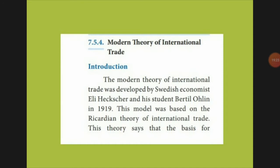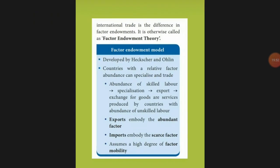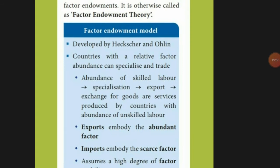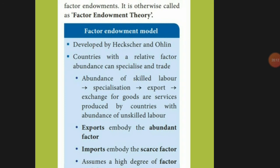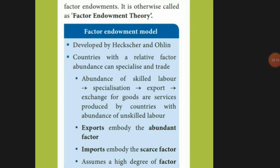Next is the modern theory of international trade, developed by Swedish economists Eli Heckscher and his student Bertil Ohlin in 1919. This model was based on and advanced from Ricardo's theory of international trade. It is also called the factor endowment theory. According to this theory, if a country is skilled and abundant in labor, it can export goods and services produced using abundant skilled labor. If a country has more capital, it will export more capital-intensive goods.